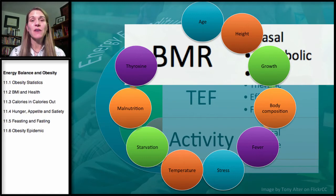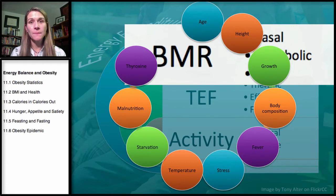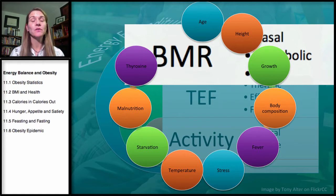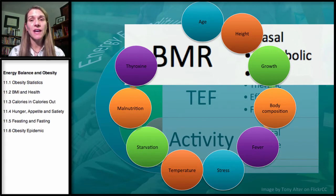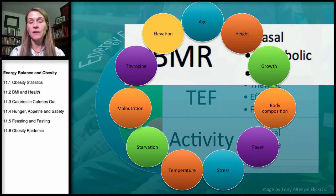Thyroxine — thyroid hormone — is used by every cell in the body and increases metabolic rate. People who are hypothyroid don't secrete enough thyroid hormone and tend to gain weight. Once they receive thyroid supplementation, it speeds up metabolism throughout all cells in the body.